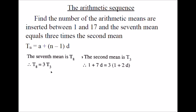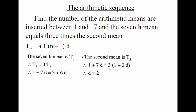So T8 equals 3 T3. Using the general term Tn equals A plus n minus 1 times D: T8 is A plus 7D. Here the first term of the sequence is 1, so T8 is 1 plus 7D. This equals 3 times T3. T3 is A plus 2D. So 1 plus 7D equals 3 times 1 plus 2D. The right-hand side is 3 plus 6D. Solve to find D — therefore D equals 2.